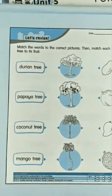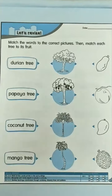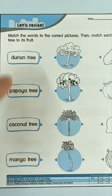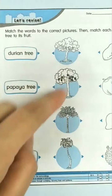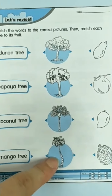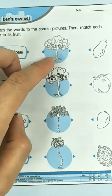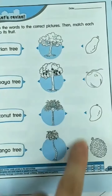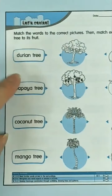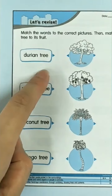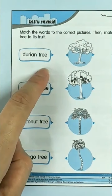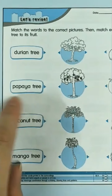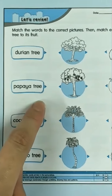Let us look into our worksheet. Match the words to the correct picture. And then match the picture to their fruit. Let's look at this one. Durian tree. Papaya tree.